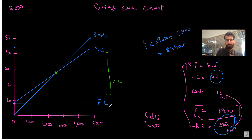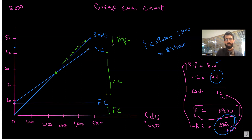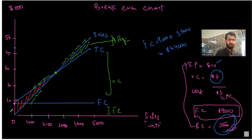On the diagram, one area represents variable cost and another represents fixed cost. After the break-even point, the sales revenue line is above the total cost line, so this area represents profit. Before the break-even point, the total cost line is greater than the sales revenue line — cost is high and sales are lower — so this area on the diagram represents loss. Extending the break-even point down to the x-axis gives the break-even in units; extending it to the y-axis gives the break-even in terms of sales revenue.